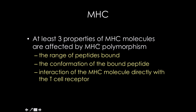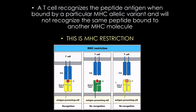At least three properties of MHC molecules are affected by MHC polymorphism: the range of peptides they can bind to — they are promiscuous but still limited by size and binding affinity; the conformation of the bound peptide; and the interaction of the MHC molecule directly with the T cell receptor, which determines CD4 versus CD8 responses.